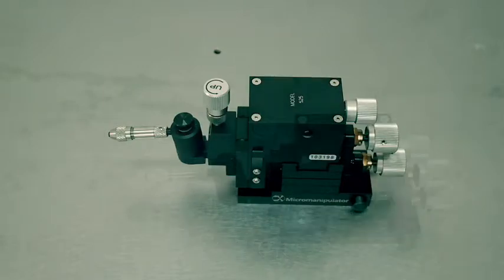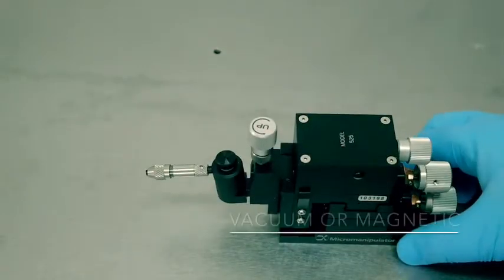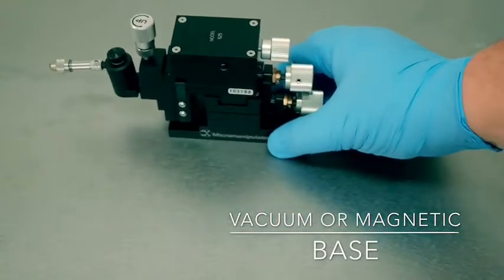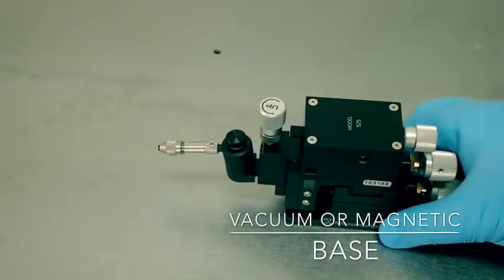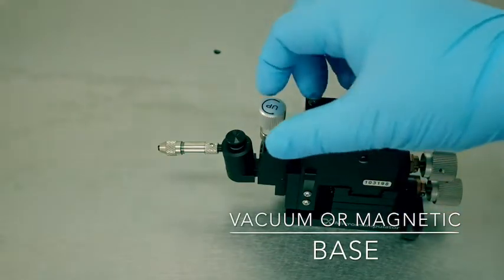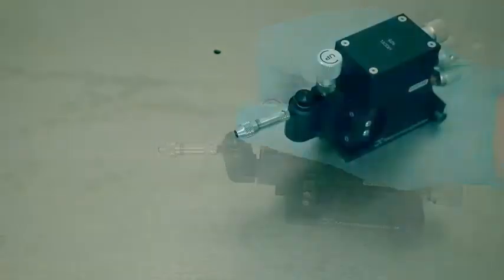The positioner we are reviewing today is vacuum stabilized. To utilize the vacuum feature, simply press and hold the plunger and move the manipulator to the new location, then release the plunger to regain stability.